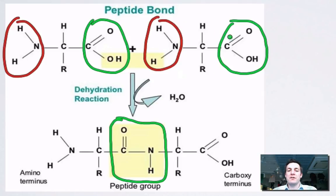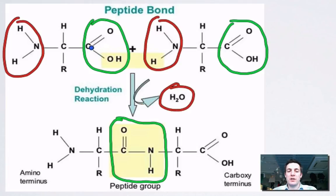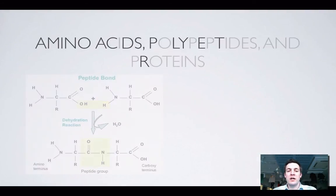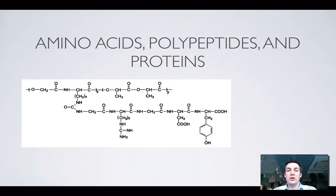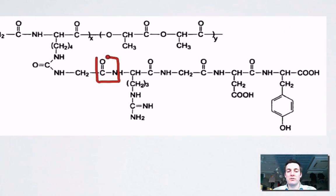If given two amino acids, I should be able to draw a polymer chain from them, remembering that water is lost because it's a condensation reaction, and there's a new bond between the carbonyl carbon and the nitrogen of the amine group. I'm not going to draw this out because it's exactly the same principle as before — let's look at a polypeptide and try to spot what monomers it was made from.